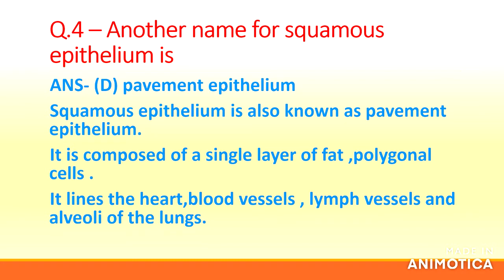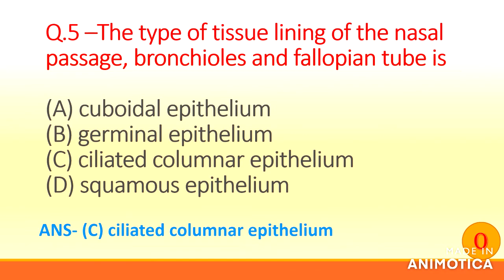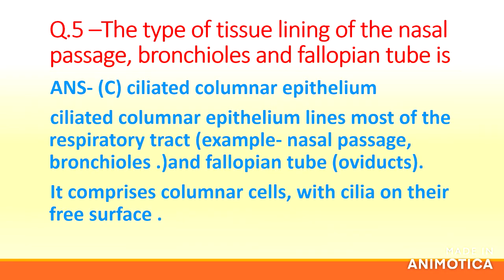It lines the heart, blood vessels, lymph vessels, and alveoli of the lungs. Question 5: The type of tissue lining the nasal passage, bronchioles, and fallopian tube is (a) Cuboidal epithelium, (b) Germinal epithelium, (c) Ciliated columnar epithelium, (d) Squamous epithelium. Answer: (c) Ciliated columnar epithelium.